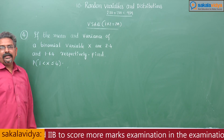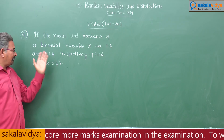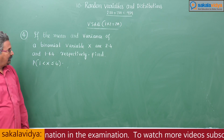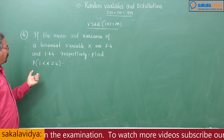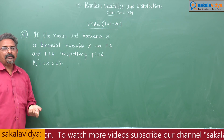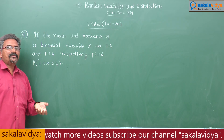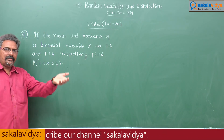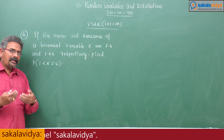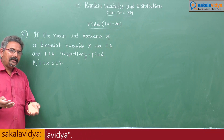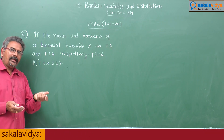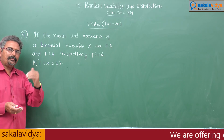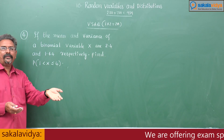The mean and variance of the binomial distribution are given, so we can find out its parameters N and P. If we know N and P, we can find out the binomial distribution (Q + P) to the power of N.